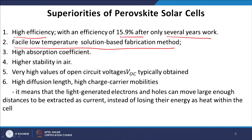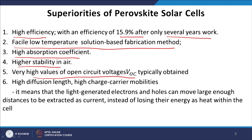This material has a very high absorption coefficient, so in a small thickness it can absorb a large amount of light. It also shows higher stability in air, very high values of open circuit voltage VOC — almost around 1.1 electron volt — high diffusion length, and high charge carrier mobilities. If the diffusion length is high as well as charge carrier mobility, then electrons and holes can travel a suitable distance to the electrode before recombining. The light-generated electrons and holes can move large enough distances to be extracted as current instead of losing their energy as heat within the cell.